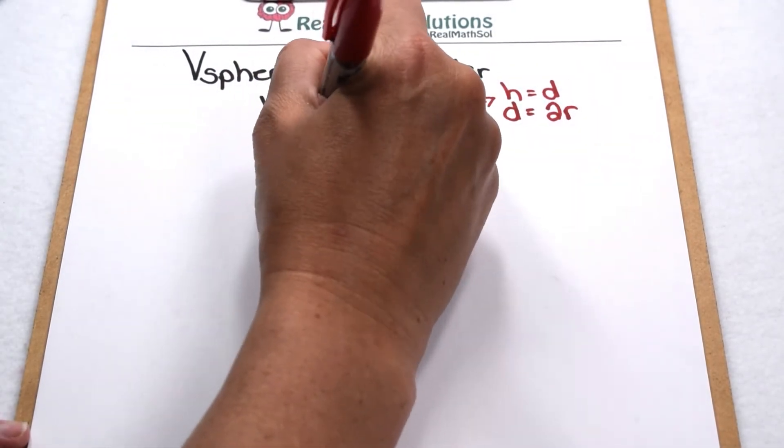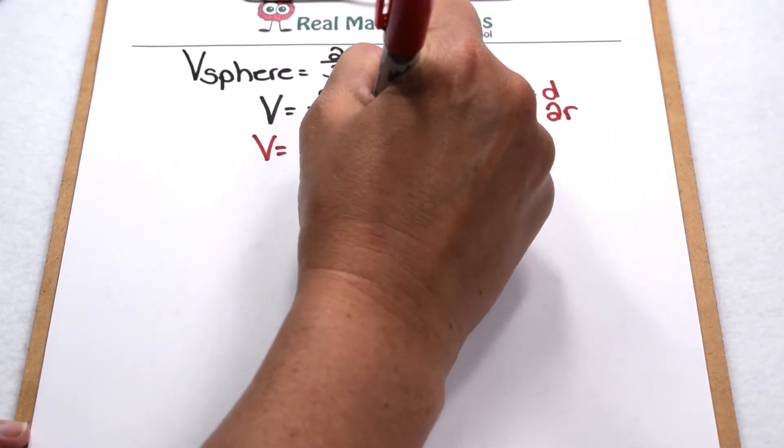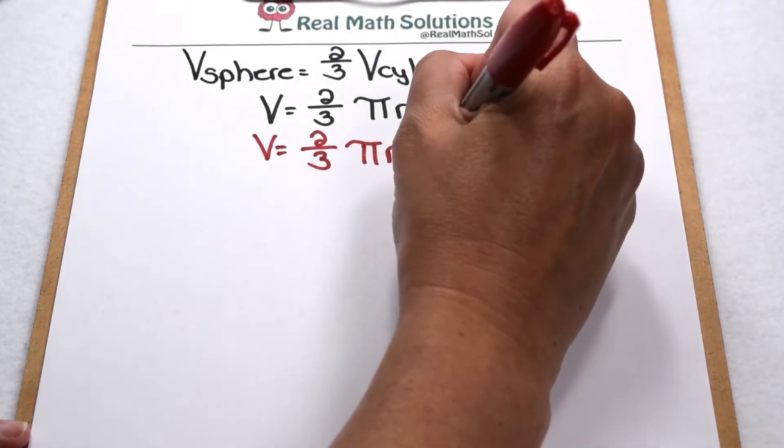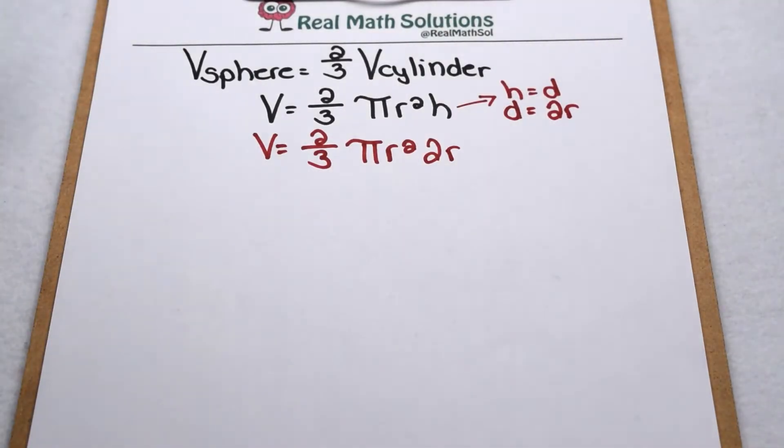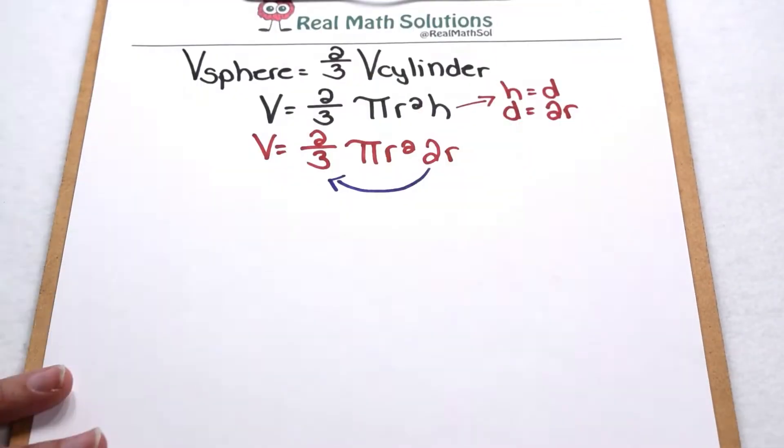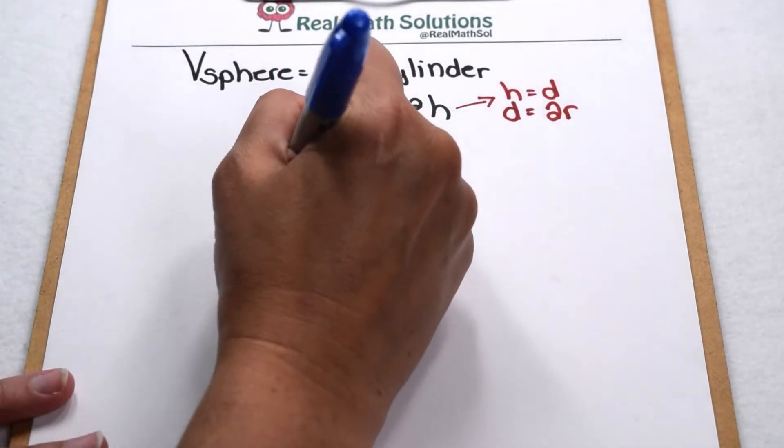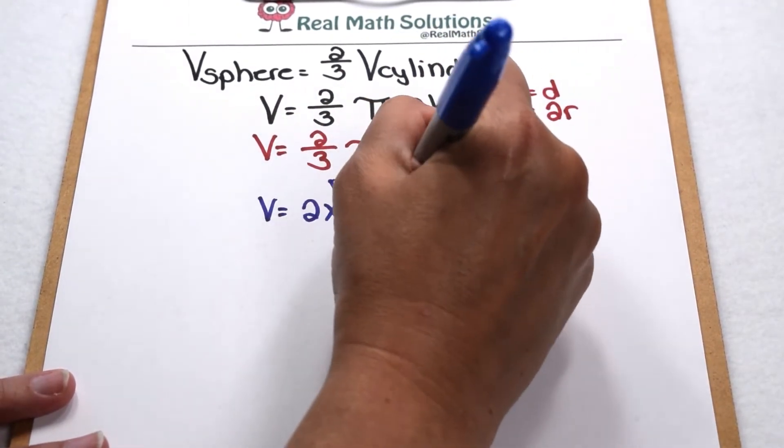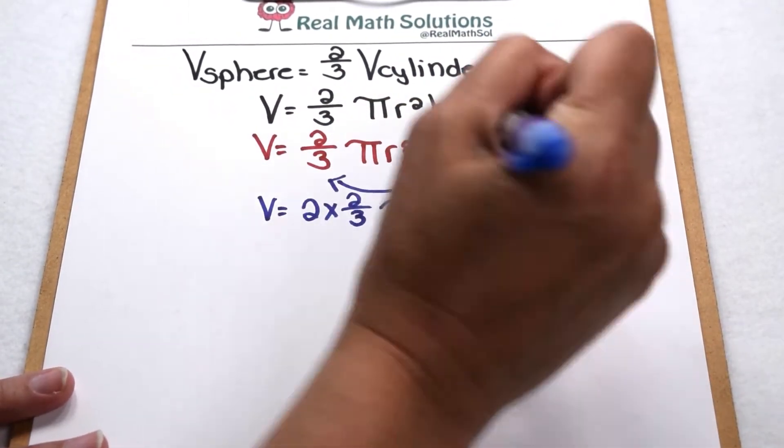So volume right now is going to be two-thirds pi r squared, and instead of height, we're going to put in two times our radius. Now we can simplify a little bit more because we can rearrange our values. We can move our two over to be with our two-thirds. So that means we have two times two-thirds pi r squared r.